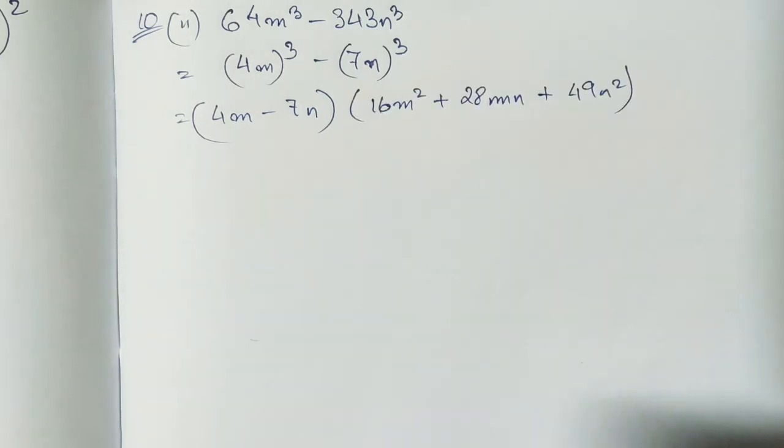Now applying these two identities, we have question number 10, that is 64 m cube minus 343 n cube. Now we know that 4 cube is 64 and 7 cube is 343, therefore by applying x cube minus y cube identity we got our answer. So this is the required answer. I'm doing the second part here, first part is your homework of course.